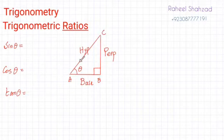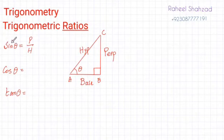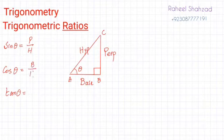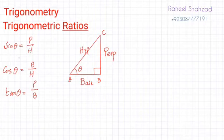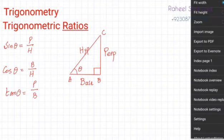When we have the ratio of perpendicular to hypotenuse, that trigonometric ratio is called sine. Similarly, if we have the ratio of base to hypotenuse, that is known as cos of theta. The third ratio, perpendicular over base, is known as tan of theta. These three ratios are used to find unknown sides and unknown angles of a triangle.